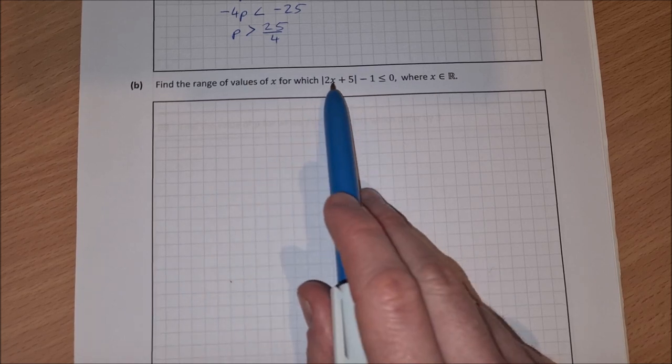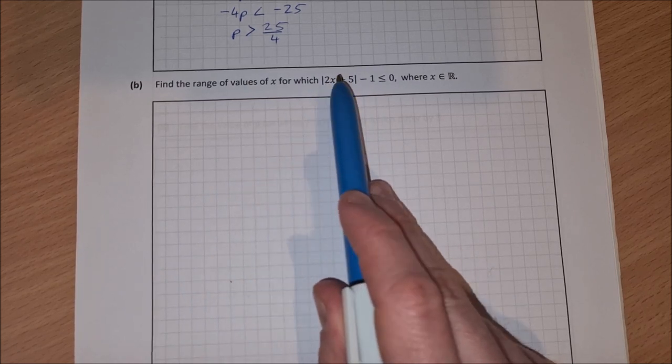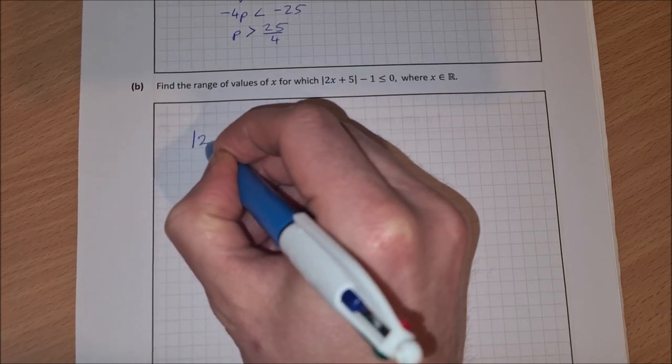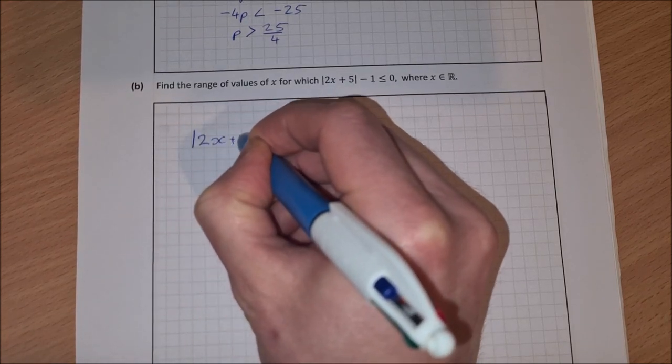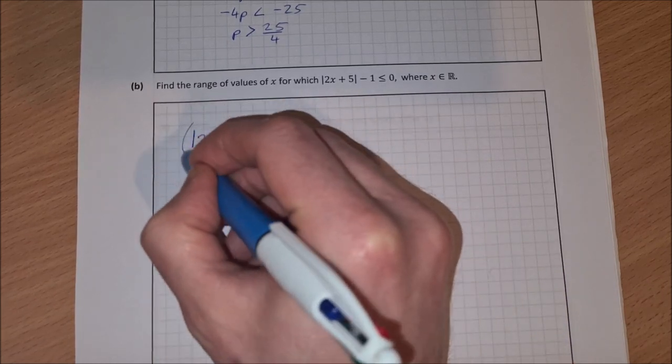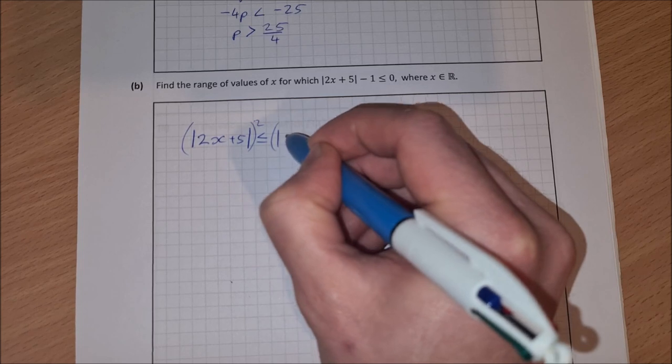So what I want to do is isolate the modulus on one side on its own and then square both sides. So if I get the absolute value of 2x plus 5 is less than or equal to 1 and then I can go and square both sides.